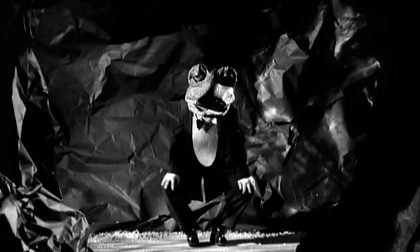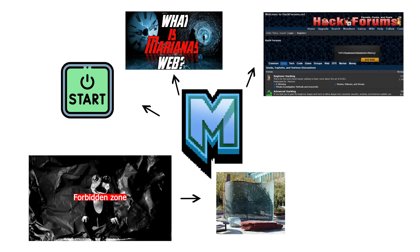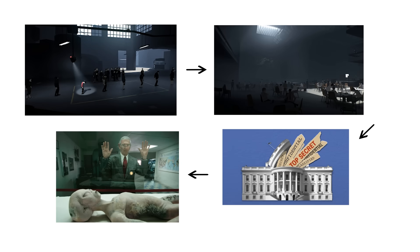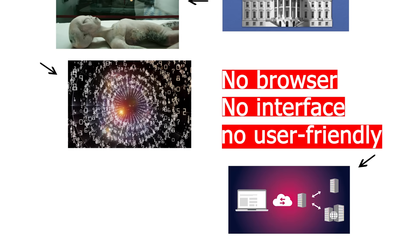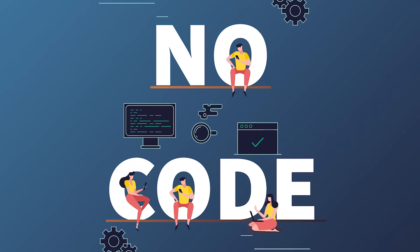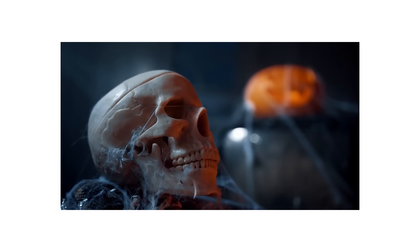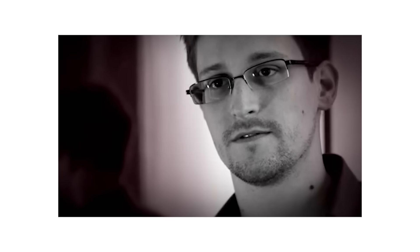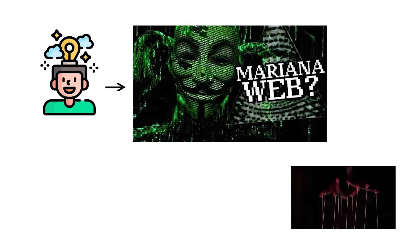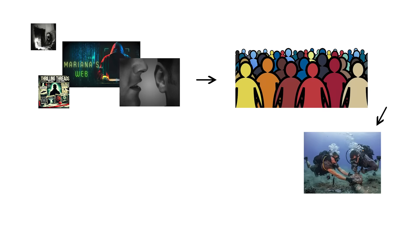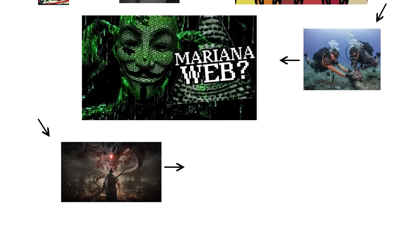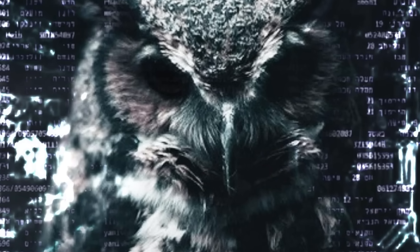The myth began in early hacker forums, where users described a forbidden zone below the dark web — a place you could only reach by completing a series of cryptographic puzzles, or proving your identity to the network itself. Once inside, they said, you could see everything: every government secret, every hidden program, every algorithm that runs the world. No browser, no interface, no user-friendly anything — just direct access to the raw nervous system of the internet. Of course, none of it's been verified: no screenshots, no code, no credible evidence. But that hasn't stopped the myth from spreading. Because it feels like it could be true. We already live in a world of invisible surveillance, classified data centers, and algorithms that know us better than we know ourselves. Is it really so hard to imagine something lies beneath all that? A master layer of control — unreachable, untouchable, unseen? You can spot this level only in stories, whispers, and conspiracy threads.